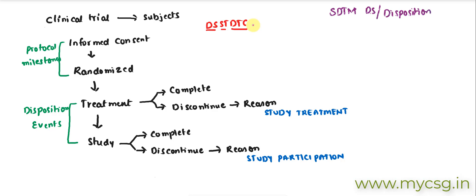The structure in the SDTM DS dataset would be one row for each of the following protocol milestones or disposition events. At most a subject can have four of these rows: the date of informed consent on its own row, the date of randomization on its own row, the date of completion or discontinuation of treatment, and the date of completion or discontinuation of the study.